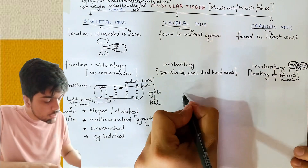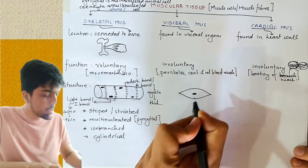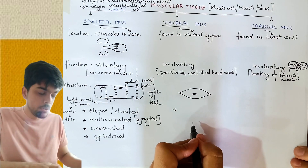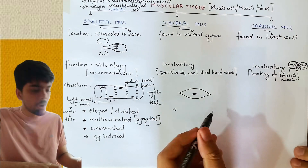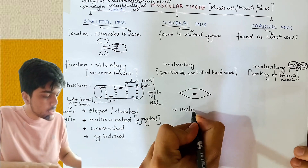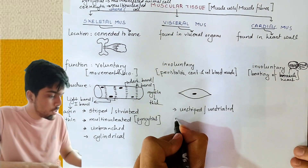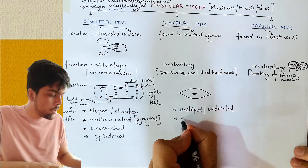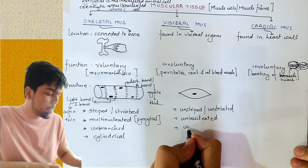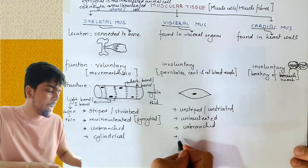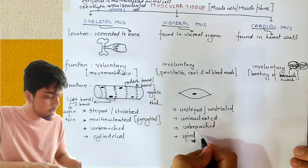Second, visceral muscle. One single visceral muscle fiber has a nucleus in the middle and no striations — so it is unstriated or non-striated. There is only one nucleus per cell, making it uninucleated. It is unbranched and spindle-shaped, meaning it is swollen at the middle and tapering at the ends.